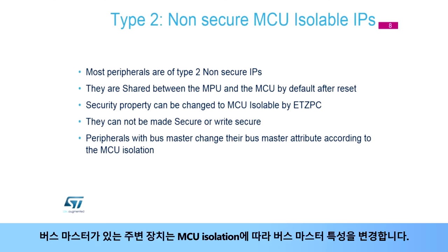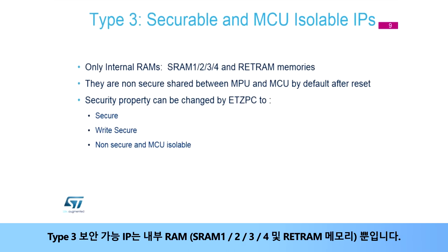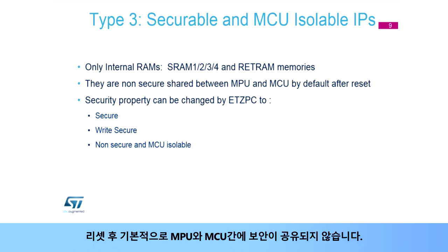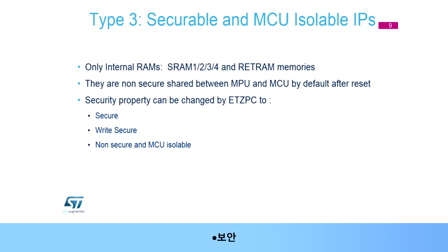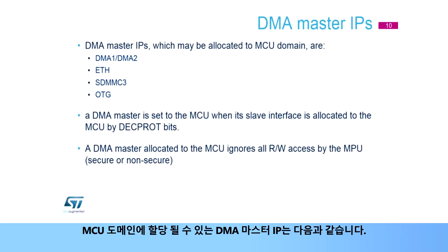Peripherals with a busmaster change their busmaster attribute according to the MCU isolation. Type 3 securable IPs are only internal RAMs — SRAM 1, 2, 3, and 4 and RETRAM memories. They are non-secure, shared between the MPU and the MCU by default after reset. The security property can be changed by ETZPC to secure, write secure, or non-secure and MCU isolable.